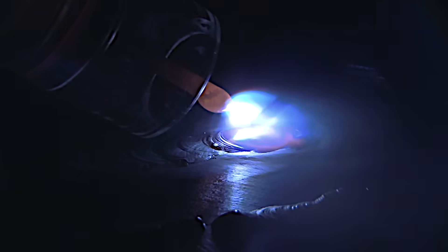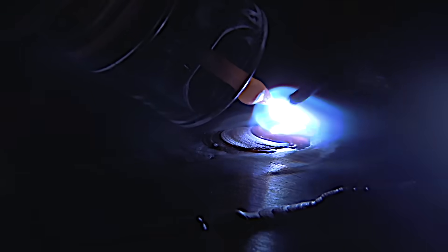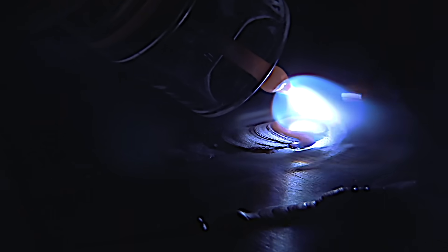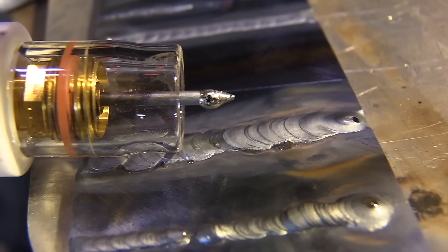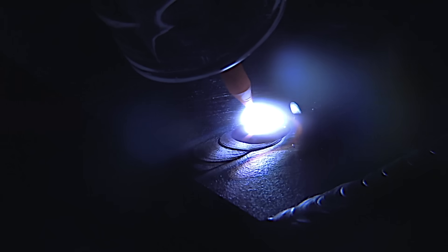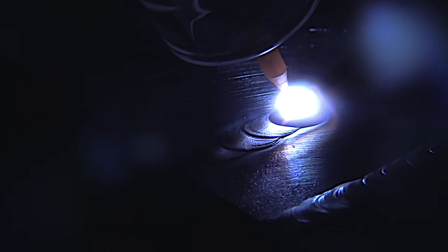When you contaminate your electrode, stop and clean it, resharpen it. Because when you got a big blob of steel on there, that steel is vaporizing, the arc's wandering all over the place—it just makes for no fun and it's hard to make a good looking weld with a dirty electrode.